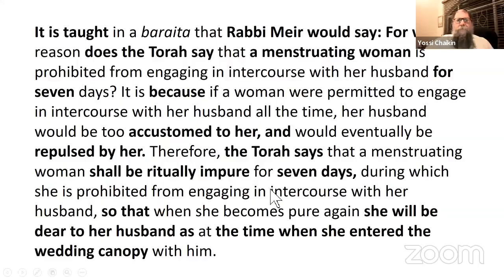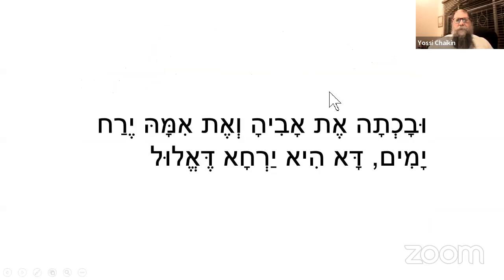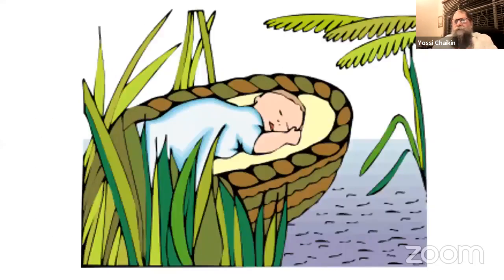Interestingly, there is one other place in the entire Torah where a unit of time is also referred to as 'yerach' — it is otherwise always 'chodesh.' That is when Moshe is placed in the basket, and his mother Yocheved hid him: 'vatitspenehu shloshah yerachim' — she hid him for three moons, three months. That is the only other time in the entire Torah where that span of time, the month, is referred to as a moon.